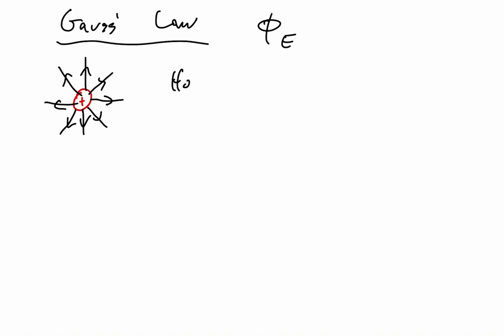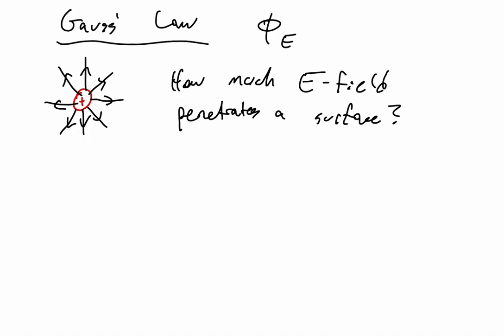Now we want to find this concept of electric flux. The best way to think about electric flux is how much of an electric field is penetrating a surface. This surface is purely imaginary — we're going to create our own imaginary closed surface in space and examine how much electric field is penetrating it. When we place our imaginary closed sphere away from the charged particle, there's going to be a perfect balancing act between the electric field lines going in and going out of the sphere. So in this scenario, our electric flux equals zero.